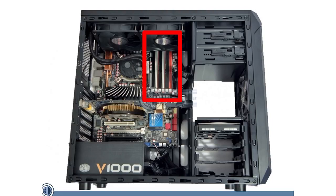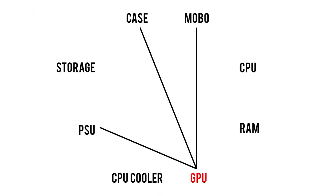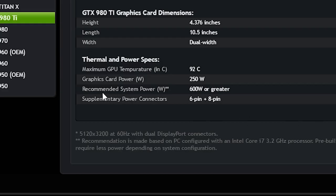Again, a low-profile memory kit can do wonders here, but equally effective is choosing a case that features either a top radiator mount with ample spacing away from your motherboard or radiator support on different sides of the chassis. Next up, we have the video card. On the graphics card manufacturer's website, it should list in plain view the minimum recommended power supply wattage required to drive the entire system safely.